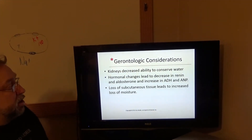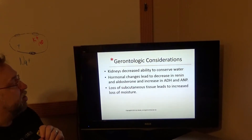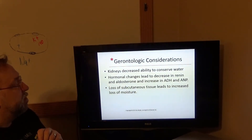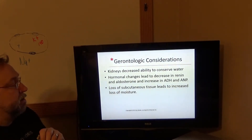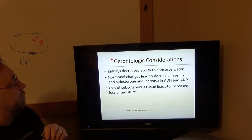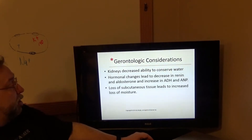Gerontologic considerations: the kidneys of the elderly have a decreased ability to conserve water. Hormonal changes can lead to a decrease in renin and aldosterone, and an increase in ADH and ANP — atrial natriuretic peptide.